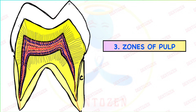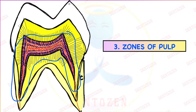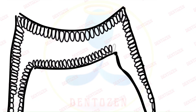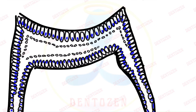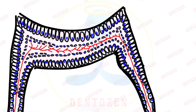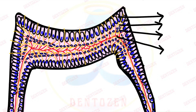Now coming to the most important part — zones of pulp. On the periphery of the pulp, the outermost layer is formed of columnar-shaped odontoblast cells with nuclei placed towards the basal end — that is the first zone. Next to these odontoblast cells, nothing is there — that is the second zone, the cell-free zone. Third is the cell-rich zone, made up of lots of cells. And exactly in the center is the pulp core, containing blood vessels and nerves that enter via the apical foramen and branch extensively.